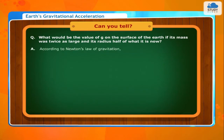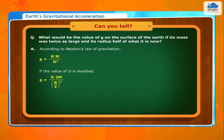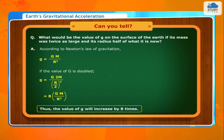According to Newton's law of gravitation, g = GM/R². If the mass is doubled and the radius is halved (R/2), then g = G(2M)/(R/2)² = 8GM/R². Thus the value of g will increase by 8 times.